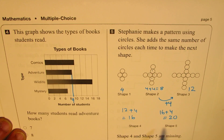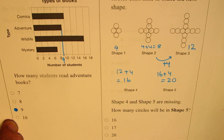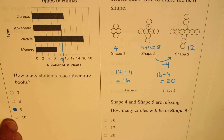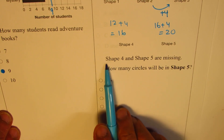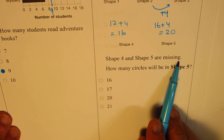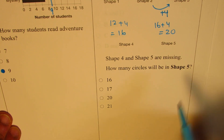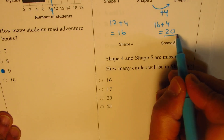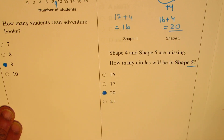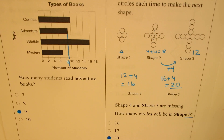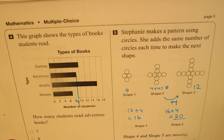So shape 4 and shape 5 should have 16 and 20 circles. Now let's look at the question itself — it says shape 4 and 5 are missing, and asks how many circles will be in shape 5. We have 20, so shape 5 will have 20 circles. We'll fill in 20 for the answer. Let's move on to question number 6.